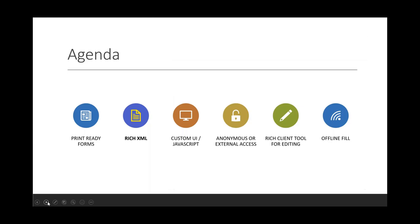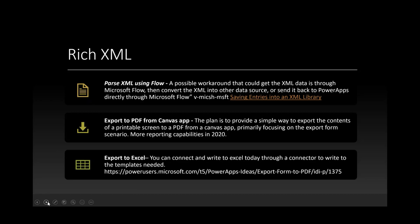Now let's dive into XML. If you've been using InfoPath for many years, you may have thousands or hundreds of thousands of XML files and wonder how you'll continue to read this data after migration. Interestingly, Flow itself has the ability to parse XML — so a possible workaround is to use Flow to parse your XML data and then convert it into another data source, then push it to have Power Apps as your front end.